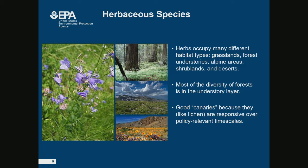What about herbs? Herbs occupy many different habitat types — they're found in grasslands, forests, understories, alpine areas, most ecosystems. Interestingly, in forests even, most of the biodiversity is actually in the herb layer. They're also really good canaries in the coal mine because like lichen, they're responsive over policy-relevant timescales — you can go out and sample five years later and actually see a result. We were building on a study by Sam Simkin and colleagues that looked at the sensitivity of herbaceous total richness in grasslands nationwide from 15,000 plots.